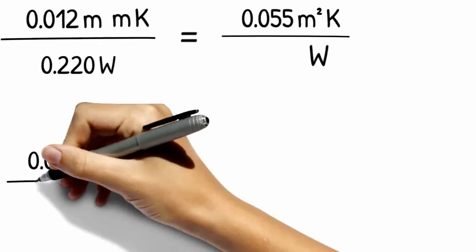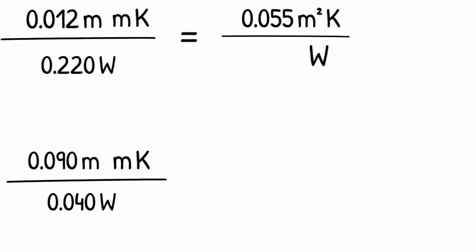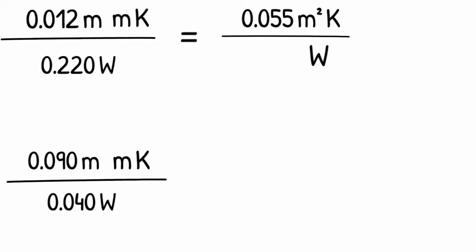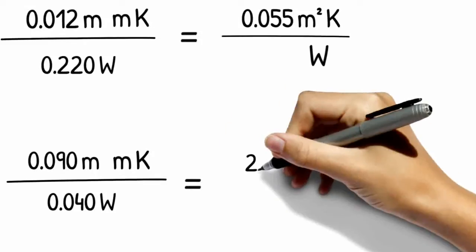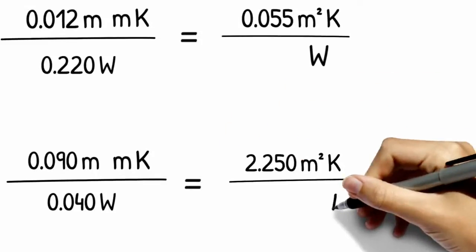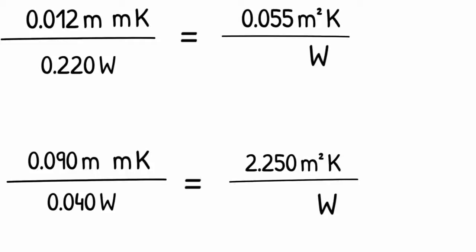And if we do this for the insulation layer, taking the layer thickness, putting it over the thermal conductivity of the insulation material, it looks like we are forgetting something here. There is the timber stud in the insulation layer to account for. So how do we do that?